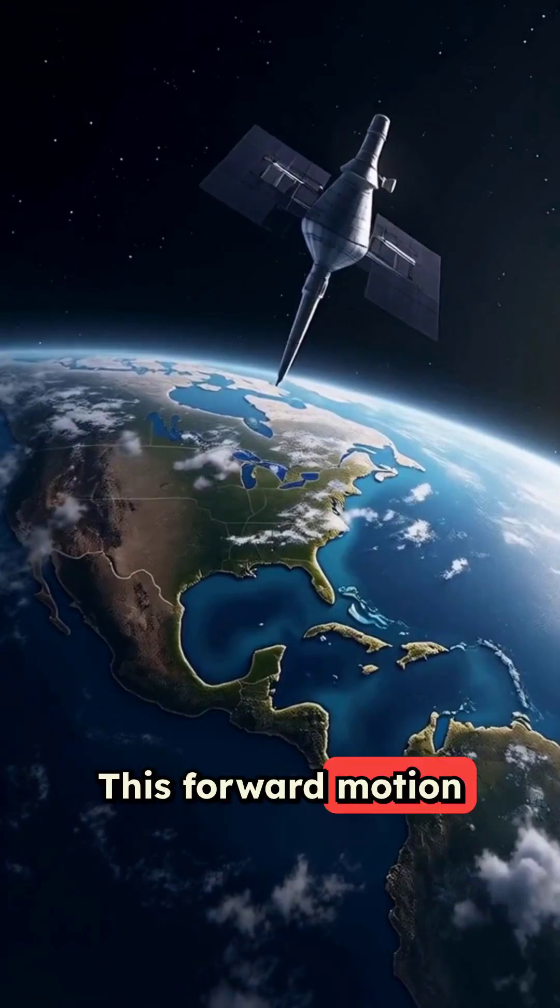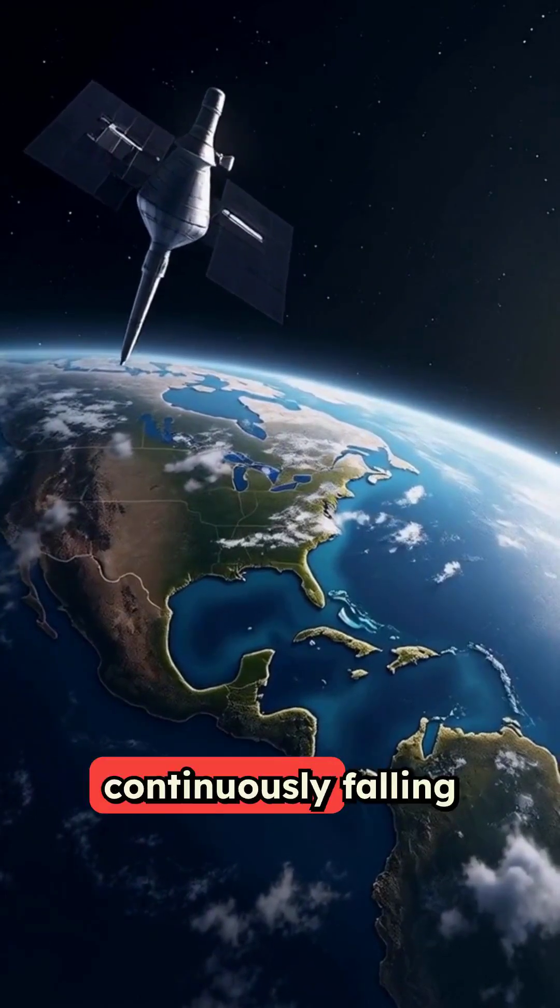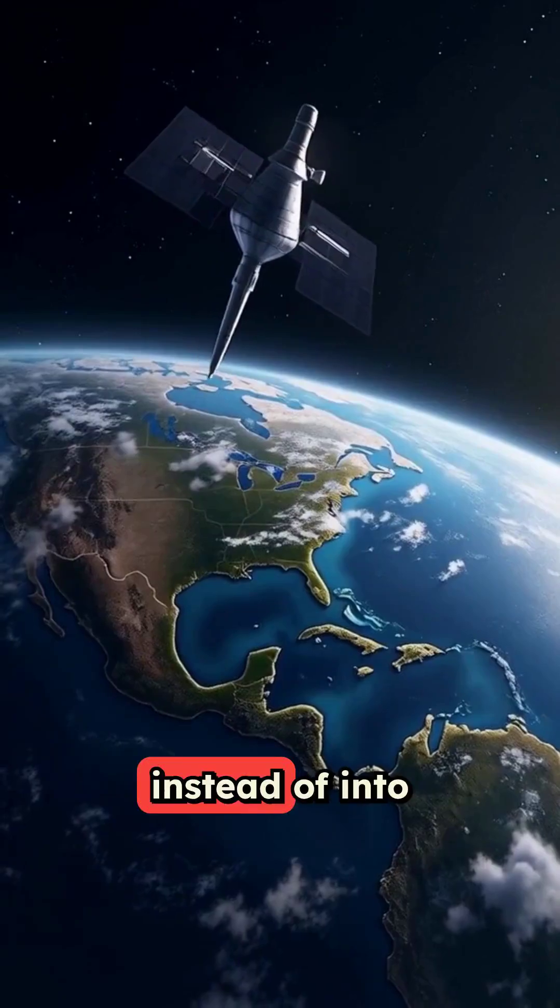This forward motion means as they fall toward Earth, they actually keep missing it, continuously falling around the planet instead of into it.